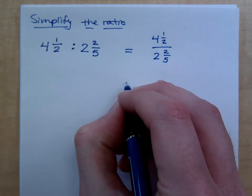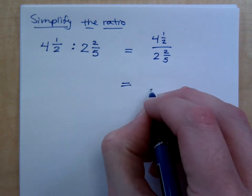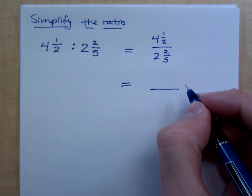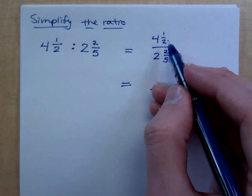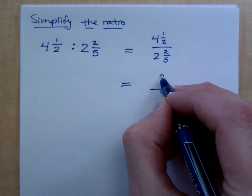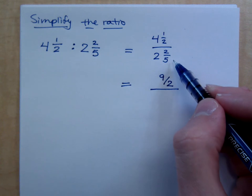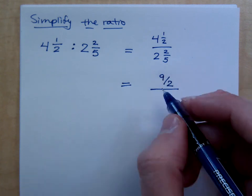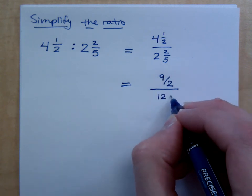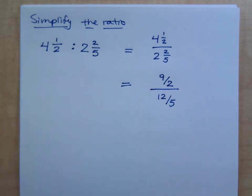So how do I convert 4½ to an improper fraction? 2 times 4 plus 1, so we get 9/2. What about 2⅖? You get 12/5, right? And the reason I convert them to improper fractions is because now I can do a fraction divided by a fraction.